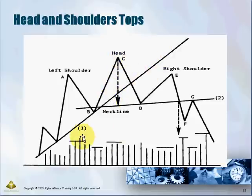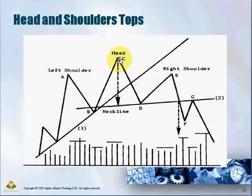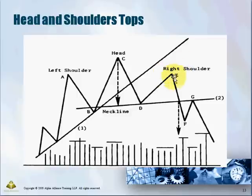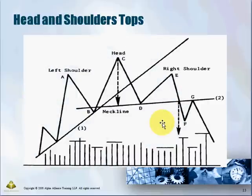The second approach is to short around the 50 to 60 percent retracement. From the highest point, if price retraces back up to the right shoulder that would be 100 percent, so a 50 to 66 percent retracement suggests a suspected right shoulder — you can probe to go short there. The third approach is the tight uptrend line on D and E: draw the uptrend line between D and E, and when it breaks you can start to go short.